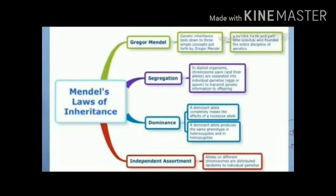We can say that this is the universal law, and it is universally proved that the Law of Dominance is a universally accepted law. The second law is Law of Segregation. This law states that during the formation of the gamete, the genes will separate out and segregate, resulting in the formation of the gamete. These two laws are based on the monohybrid cross.